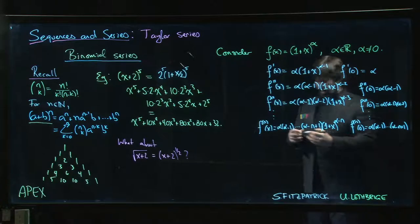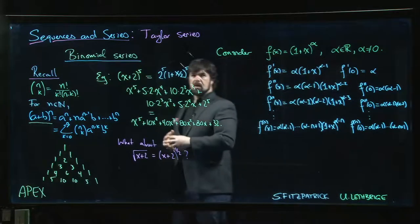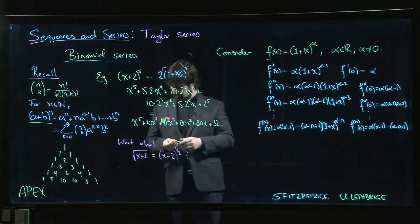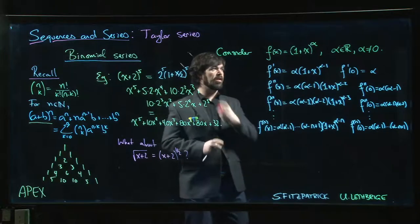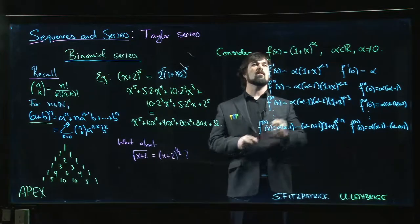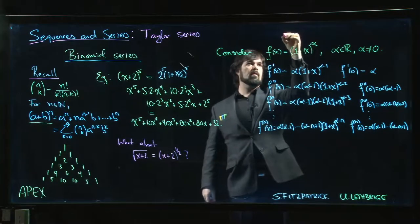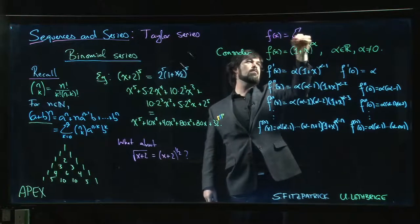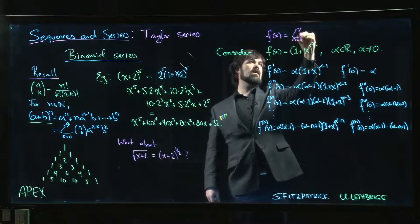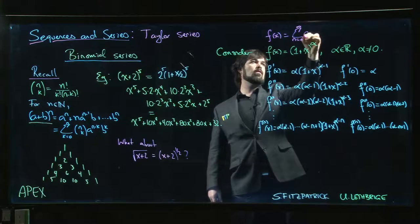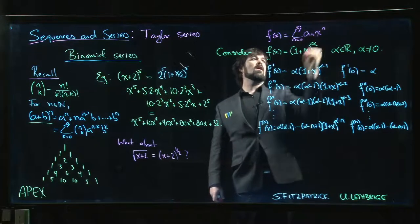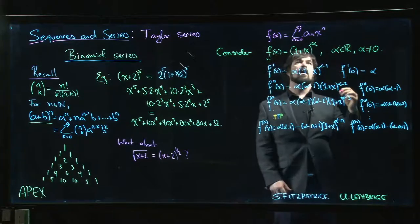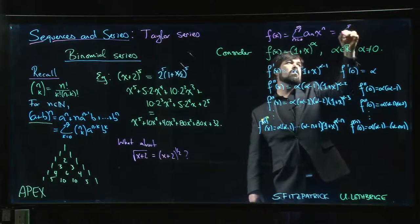Okay, so what do we do with that? Well, in the Maclaurin series formula, we want to be able to write this thing. We want a Taylor series for it, a Maclaurin series, so we want to figure out how to write f of x as a power series: sum from n equals 0 to infinity, a_n x to the n. And we know that this should look like the nth derivative at 0 over n factorial times x to the n.